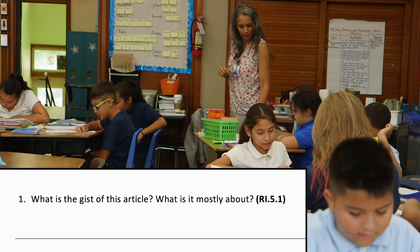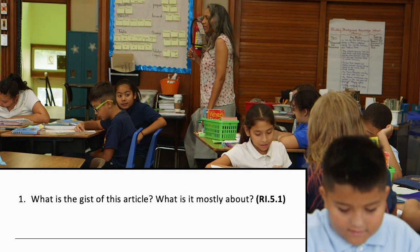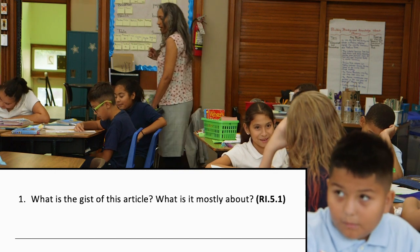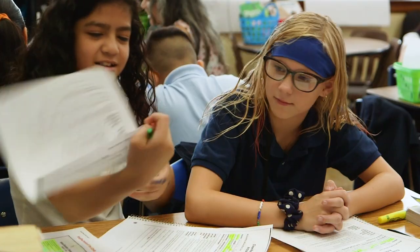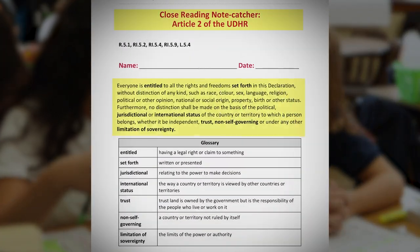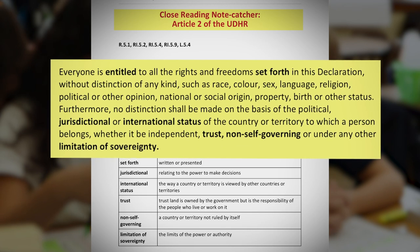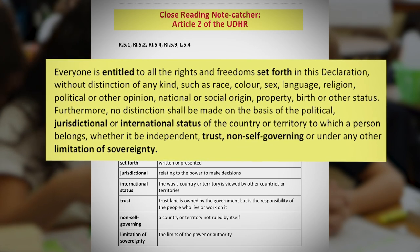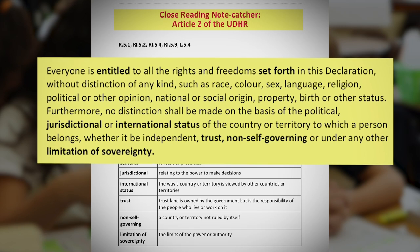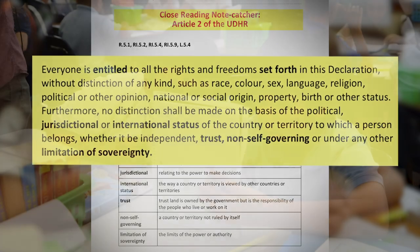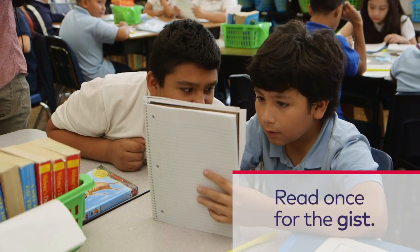What is the gist of this article? What is it mostly about? Today we were really digging deep into the close read of Article 2, which is Don't Discriminate. When we started off reading, I taught my students first: let's just read through the first time and come up with what we think is the gist.